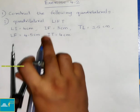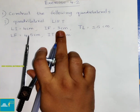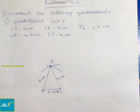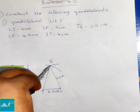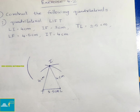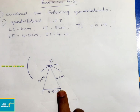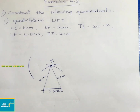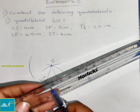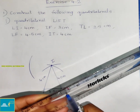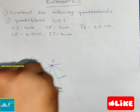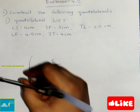Mark the lengths as 4 cm each. With I as center, draw a 3 cm arc. They have given LF equals 4.5 cm, so from L as center, draw an arc of radius 4.5 cm that meets the previous arc at point F. Take 4.5 cm radius, draw the arc from L, and mark this point as F.